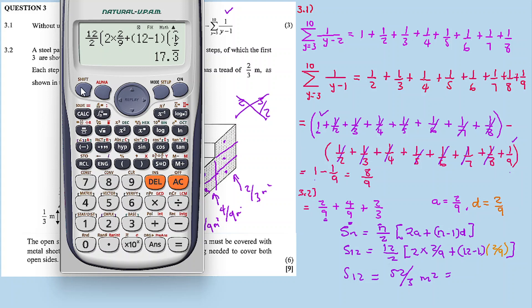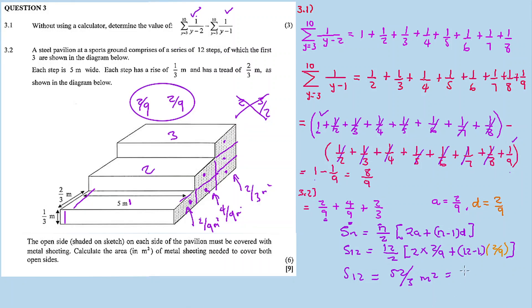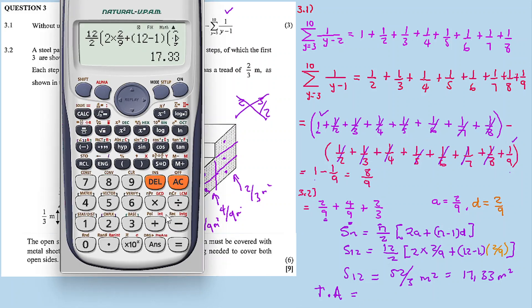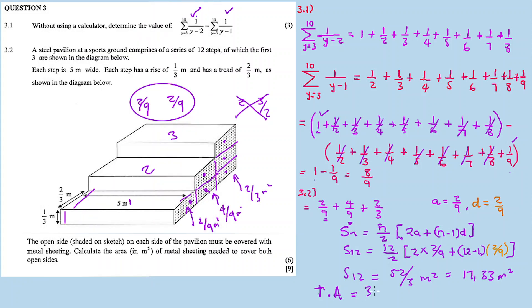Converting 52 over 3 to decimal gives approximately 17.333 metres squared. Since there are two open sides, the total area equals 17.333 times 2, which is approximately 34.67 metres squared — rounded to two decimal places. So the total area of metal sheeting needed is 34.67 metres squared.